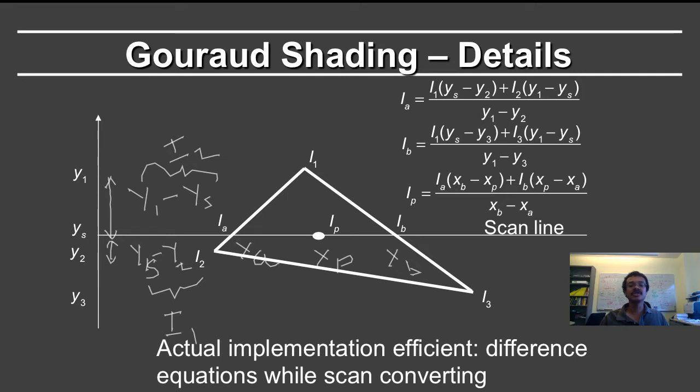And therefore there are very efficient algorithms that in fact don't involve multiplication or division at all. They just incrementally add quantities as you go from one scanline to the next. And this is a process which is generally known as scan conversion, but it also does the interpolation which is needed for Gouraud shading.